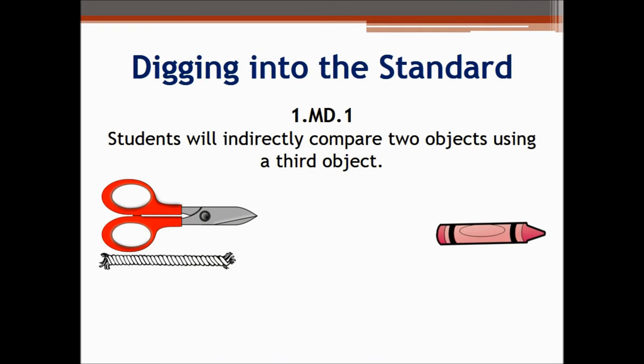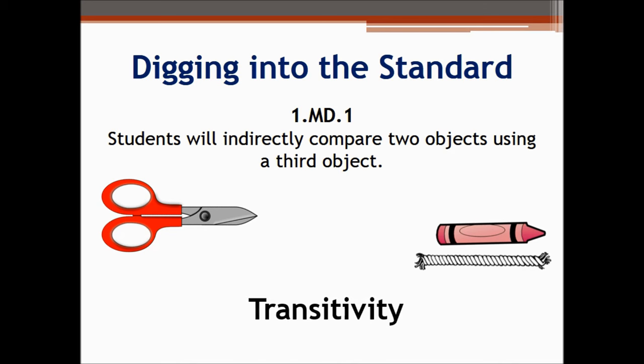In standard MD.1, students are asked to compare the lengths of two objects indirectly using a third object. This means that I can use a piece of rope to compare the lengths of scissors and a crayon without moving the scissors or crayon. Since I see that the scissors are longer than the rope and the rope is longer than the crayon, I can determine that the scissors are longer than the crayon. This principle of indirectly comparing the size of two objects is called transitivity.